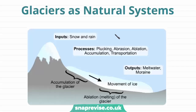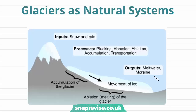This diagram is showing the open system of an ice sheet. Systems that are open include inputs, stores — which is the mass of ice — processes, shown here as plucking, abrasion, ablation, accumulation and transportation. As well as outputs, shown here as meltwater and moraine.